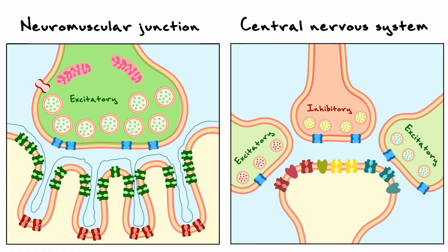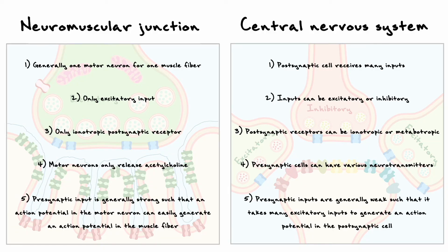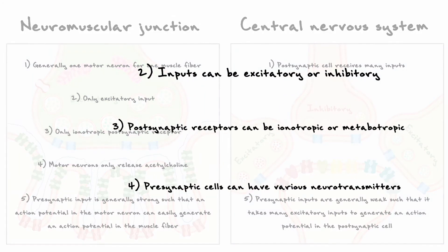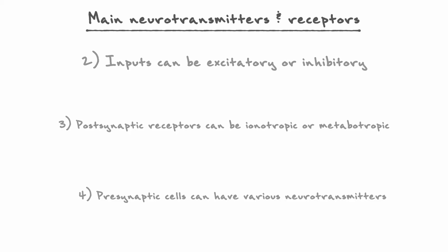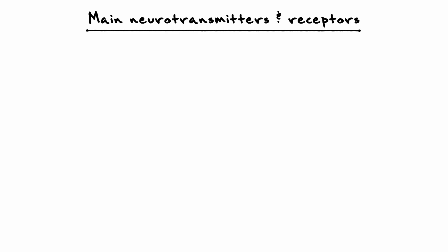Now that we have covered the two main categories of metabotropic receptors, let's continue discussing the differences between neurons at the neuromuscular junction and neurons in the central nervous system. The next topic will cover points 2, 3, and 4 together — that inputs can be excitatory or inhibitory, that postsynaptic receptors can be ionotropic or metabotropic, and that presynaptic cells can have different types of neurotransmitters. To cover these points, we will explore the main neurotransmitters as well as their receptors in the central nervous system.